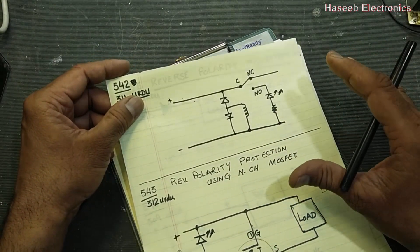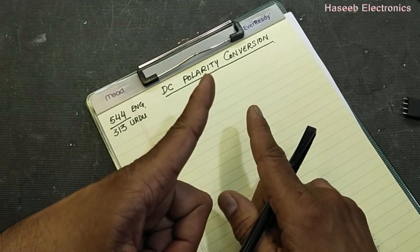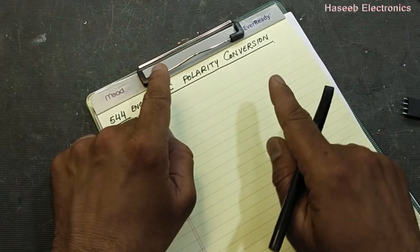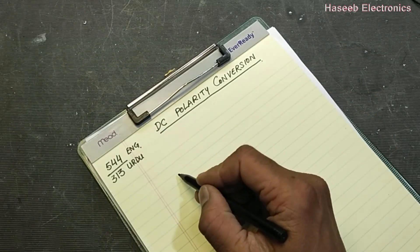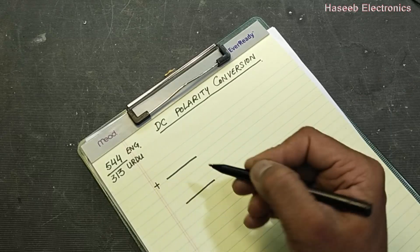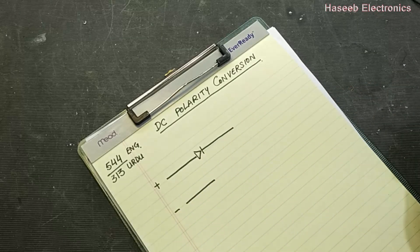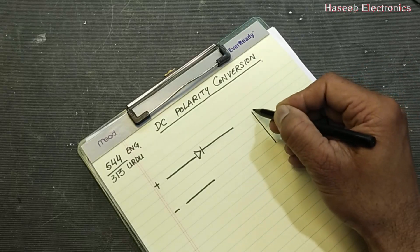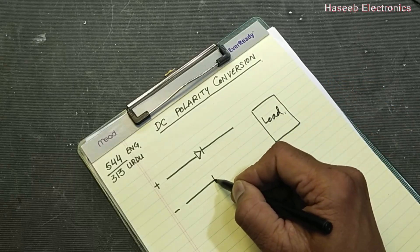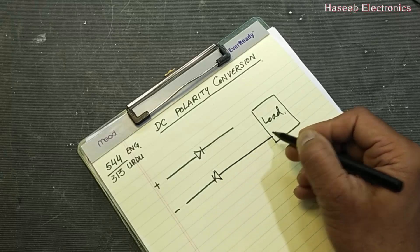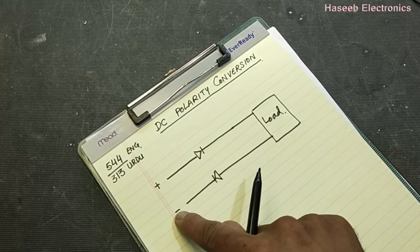Today we will discuss how we can convert polarity. Those previous circuits were blocking the reverse polarity, but now we want the circuit to work whether we apply DC voltage in any direction. For that purpose, a very simple way is to use a bridge rectifier. For example, our input line — apply positive voltage here, negative voltage here — this positive voltage will go directly to the load.